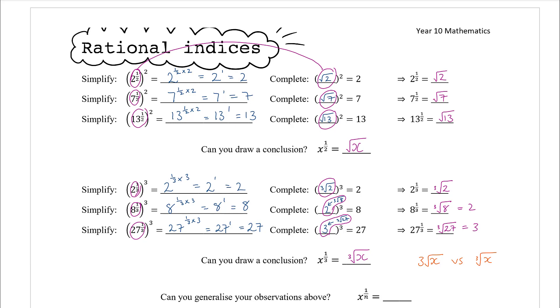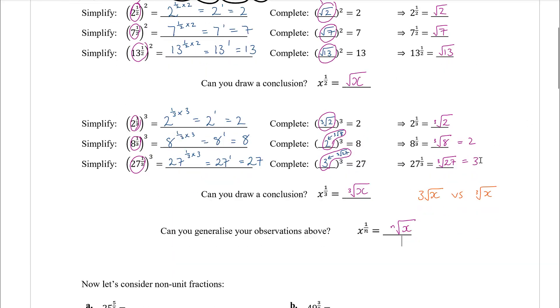Generalizing further: if we've got x to the power of one over n, that is the nth root of x. So x to the power of a quarter is the fourth root of x, x to the power of a fifth is the fifth root of x, and so on.